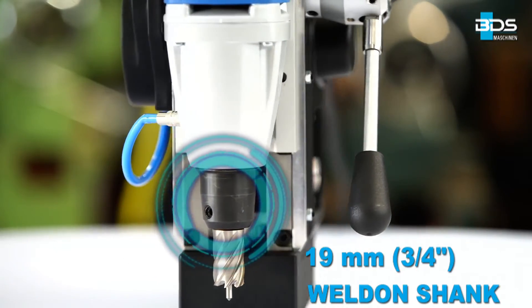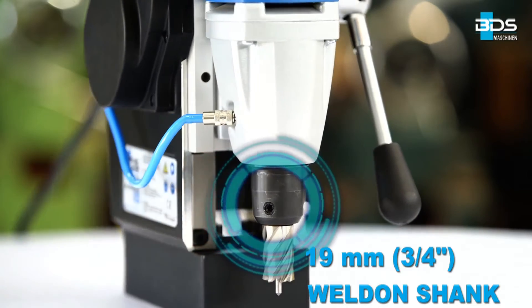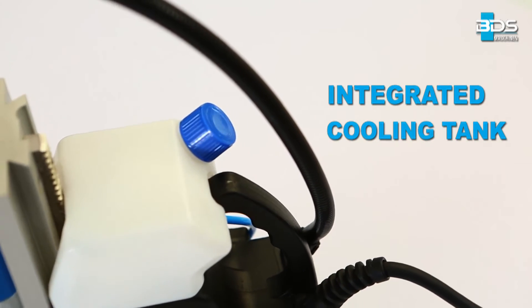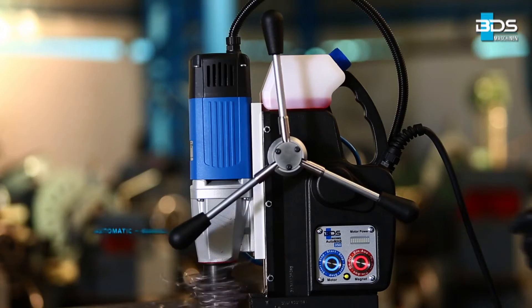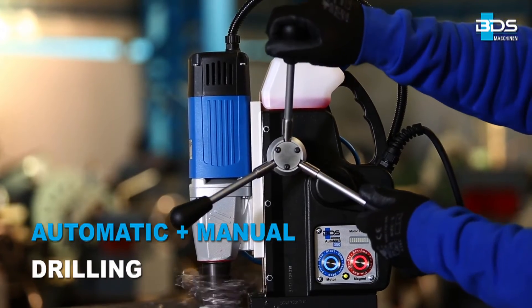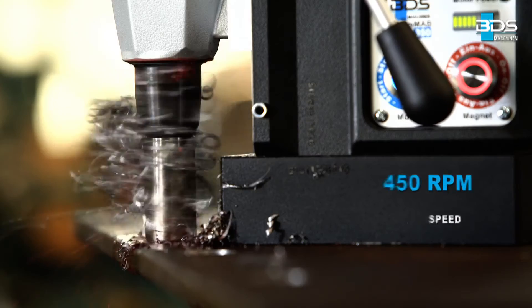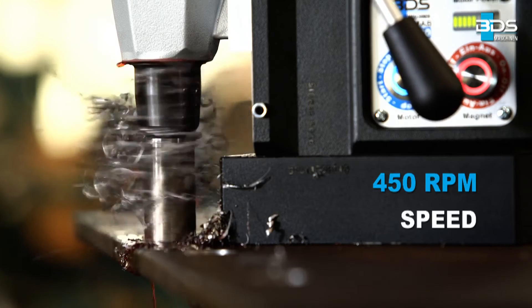19mm weldon shank, permanent internal lubrication, integrated cooling tank, automatic as well as manual drilling, delivering 450 RPM speed.